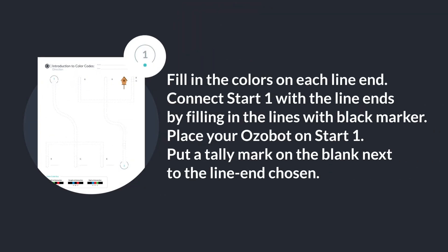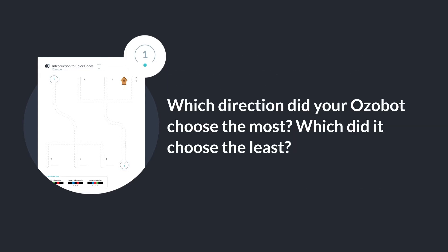Can you fill in the colors on each line end? Then connect start one with each line end by filling in the guidelines with black marker. Place your Ozobot on start one and put a tally mark on the blank next to the colored line end that your bot chooses. Place your bot back on start one and let it choose a direction five more times. Keep track with tally marks how many times Ozobot chooses each direction. Which direction did your Ozobot choose the most? Which did it choose the least?